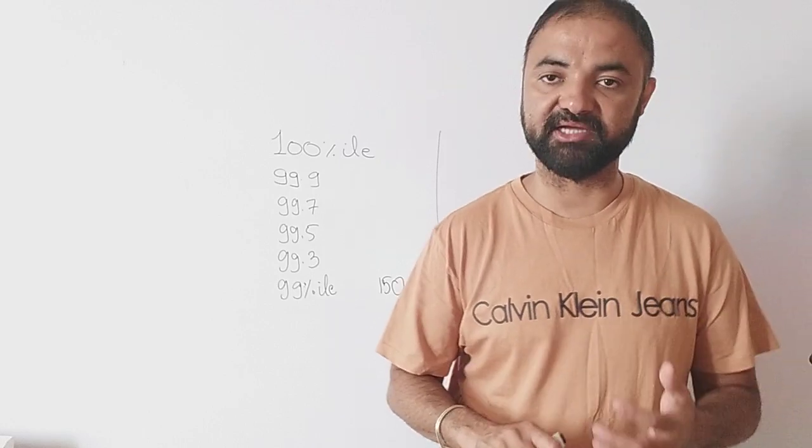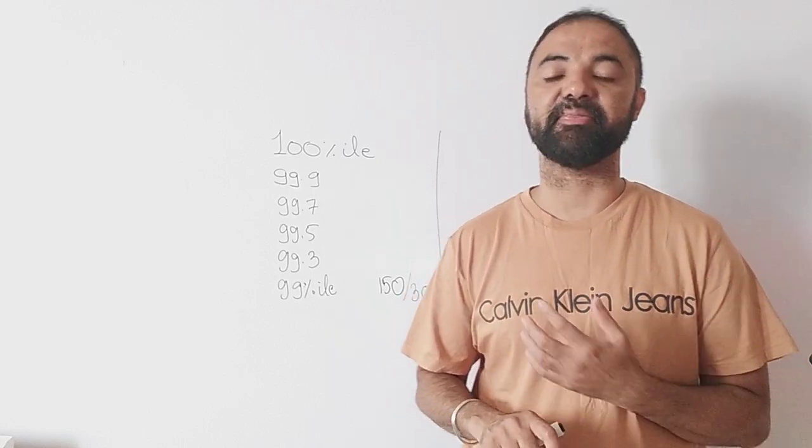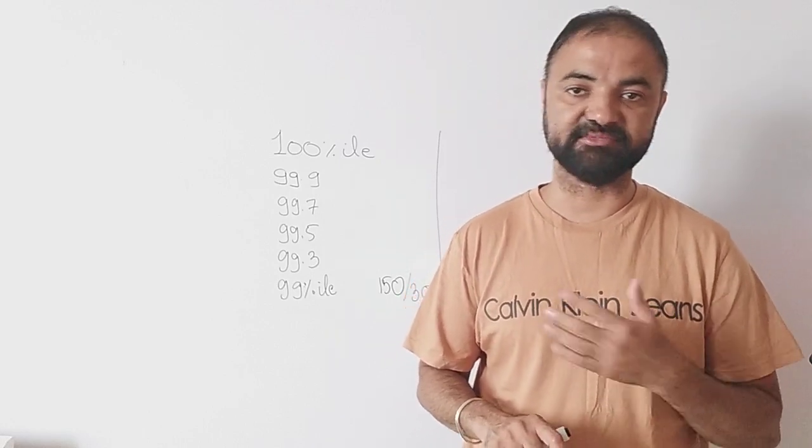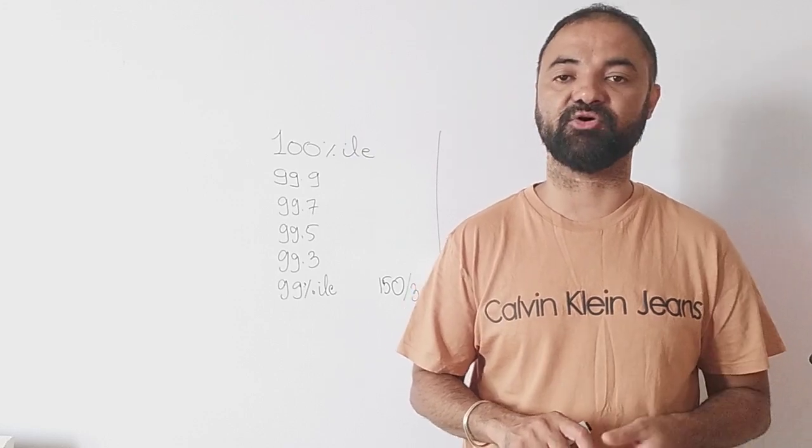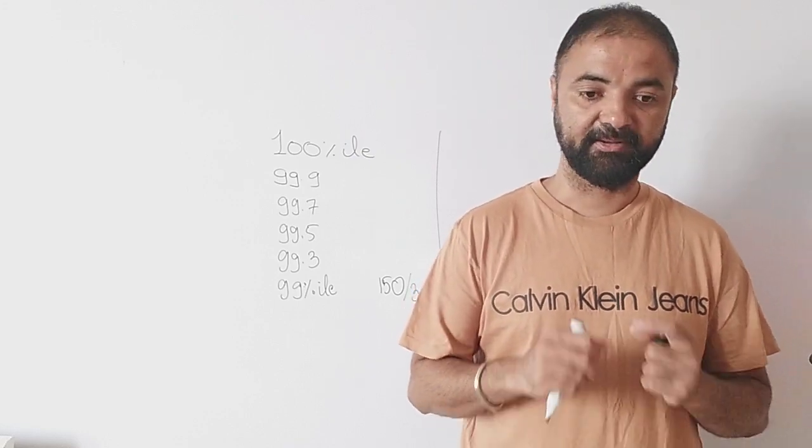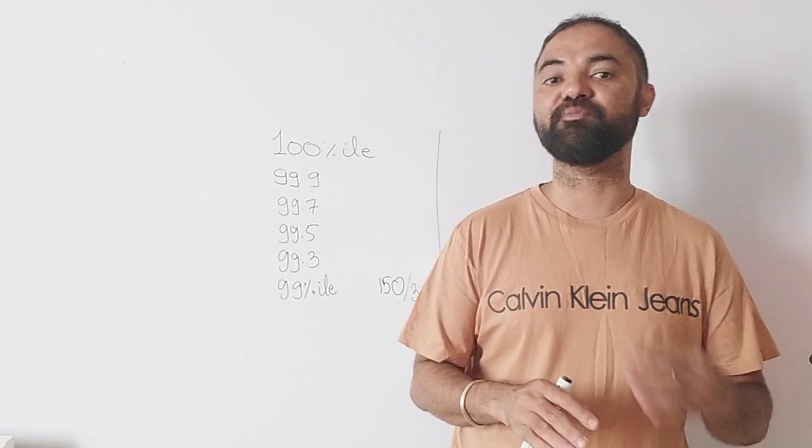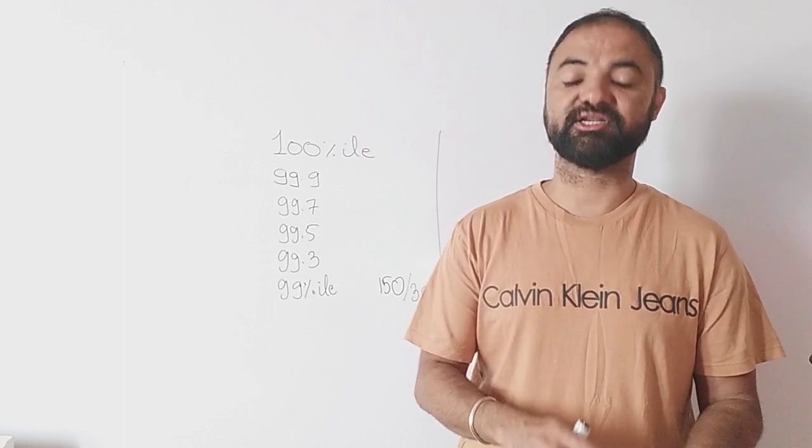At 99 percentile plus I believe you will start getting the IIM calls - all the major IIMs, SPJN, FMS, all the major calls are there at 99 percentile. But if you target 99 you might get 95, so the target has to be higher.